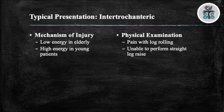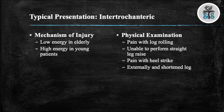On your physical exam, the patient will have pain with log roll, will be unable to perform a straight leg raise, and they'll have pain with heel strike. The patient's leg may be externally rotated and shortened. You want to make sure you do a thorough secondary exam as these patients can have other injuries such as other fractures, intracranial hemorrhages, rib fractures, pulmonary contusions, and intra-abdominal injuries.